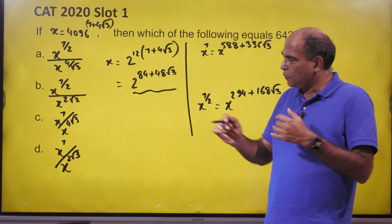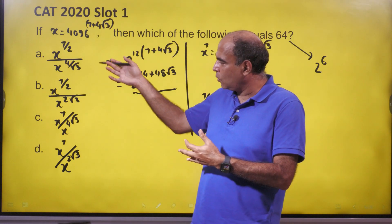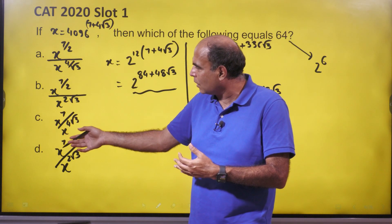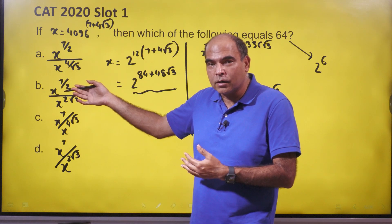Once you get that, if you check the options, this is an option-based question. All four options have either x raised to 7 on the numerator or x raised to 7/2 in the numerator.